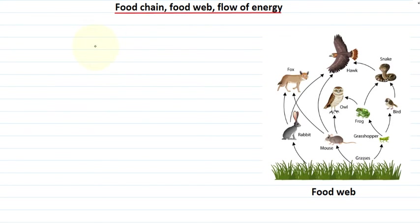This energy then reaches other organisms — those who depend on plants for food. As they have plants as their food, the energy keeps on getting transferred to other organisms.